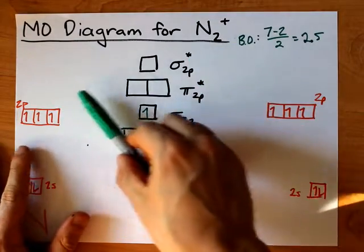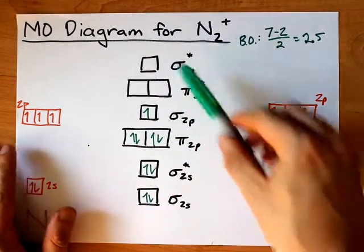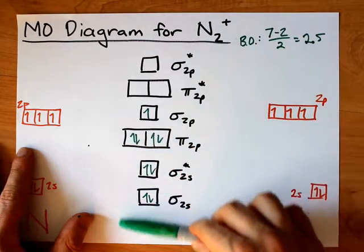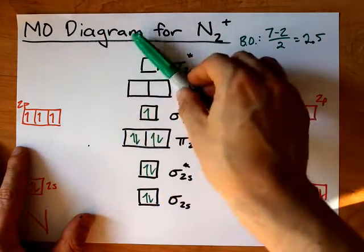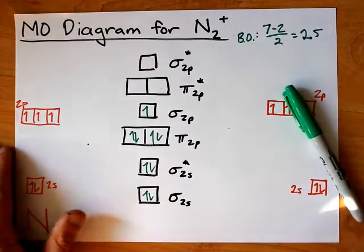Alright? But for lithium, beryllium, boron, carbon, and nitrogen, feel free to use the blank version of this molecular orbital diagram. You'll be safe. Alright? Best of luck.